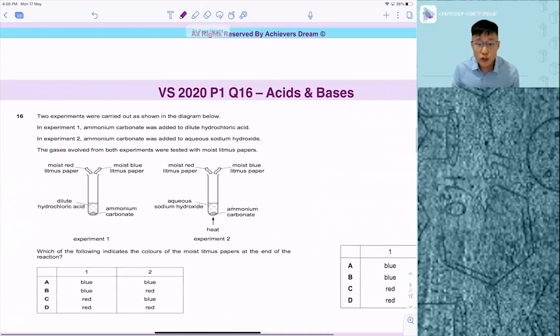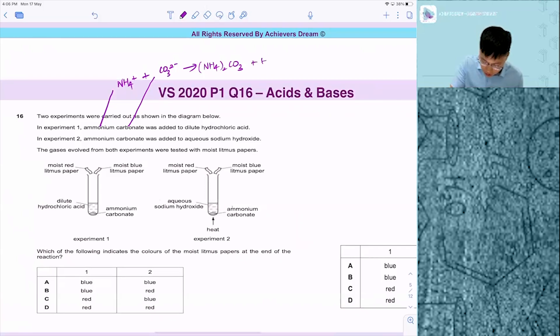Ammonium is NH4+, carbonate is CO3 2-. When you form them together as a compound, you form (NH4)2CO3. When you plus HCl, it's a carbonate plus acid.